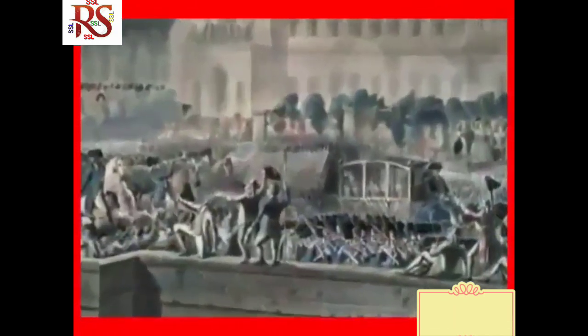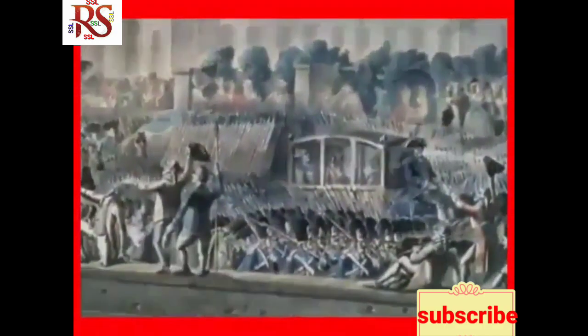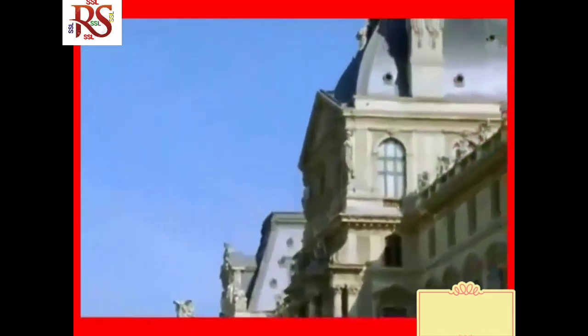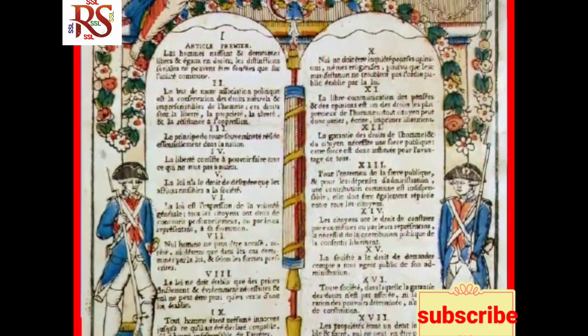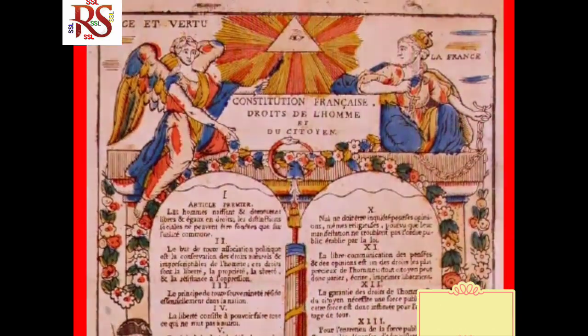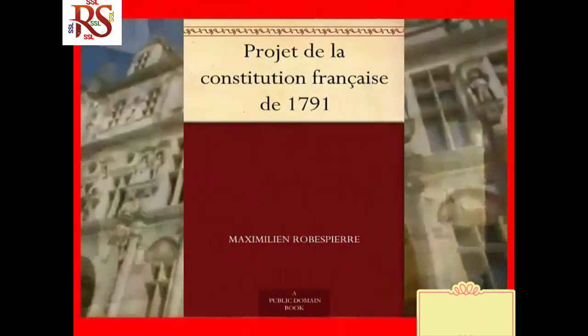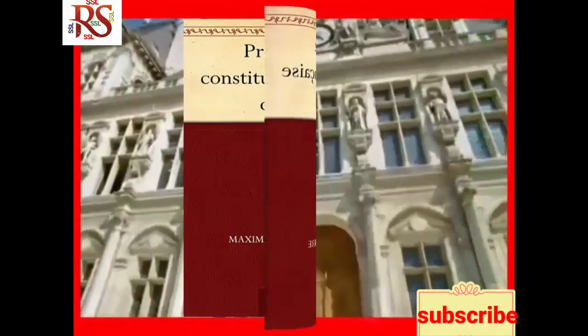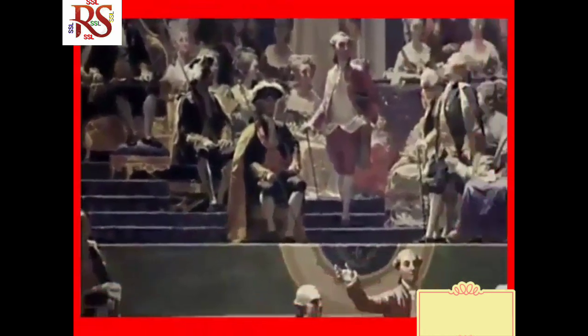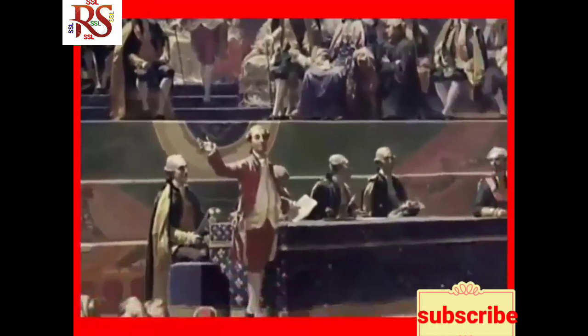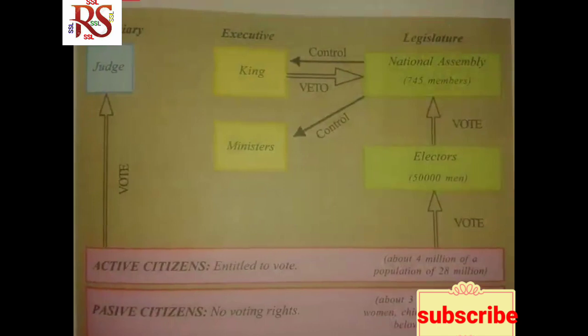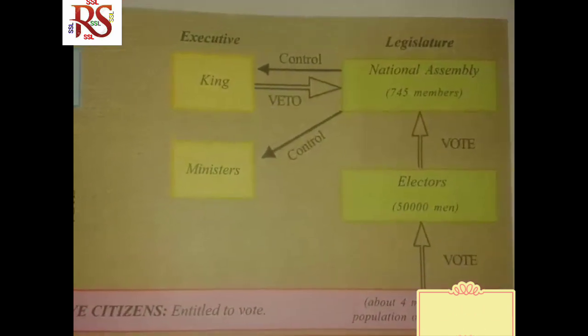The period from 1793 to 1794 is known as the Reign of Terror. Robespierre, the leader of the Jacobin club, arrested, imprisoned and then tried all the people he saw as enemies of the republic through a revolutionary tribunal. If the court found them guilty, they were executed.